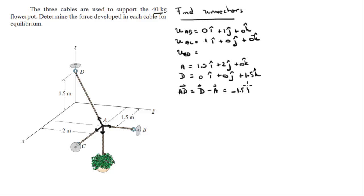These are all vectors, so D minus A comes out to be minus 1.5 in the i minus 2 in the j plus 1.5 in the k. Then you need to find the magnitude of this vector.